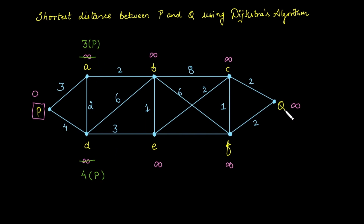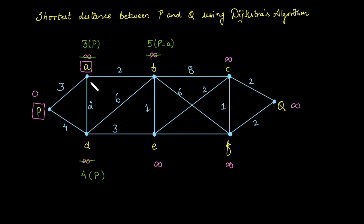Out of the unvisited vertices, we take the minimum cost vertex. The minimum cost is 3, so we will log the next vertex as A. From A, we can move to vertex B as well as D, since D is not yet logged. From A to B, the total cost is 3 plus 2, that is 5. Keep the minimum and discard infinity. From A to D, the cost is also 3 plus 2, that is 5. The current minimum for D is 4, so we discard the larger cost of 5.